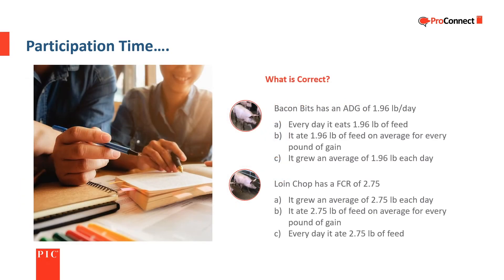Two more questions. Bacon Bits has an average daily gain of 1.96 pounds per day. Does that mean: A, every day it eats 1.96 pounds of feed? B, it ate 1.96 pounds of feed on average for every pound of gain? Or C, it grew an average of 1.96 pounds per day? The correct answer is C — it grew 1.96 pounds per day.